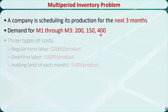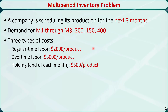Three types of costs may be involved for each product. If a product is manufactured using regular-time labor, the cost is $2,000 per product. If it is manufactured using overtime labor, the cost is $3,000 per product. If they manufacture more products than the demand for that month, there will be a holding cost at the end of that month, which is $500 per product.